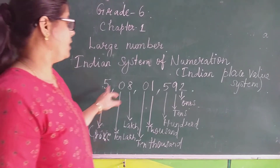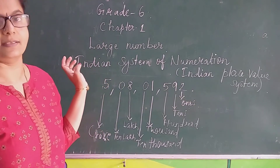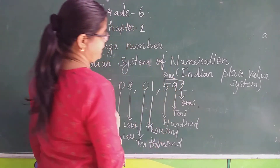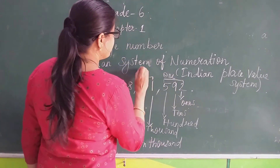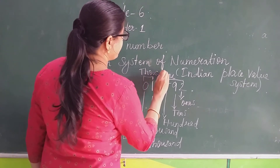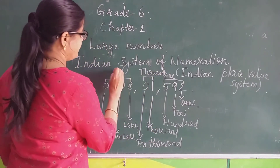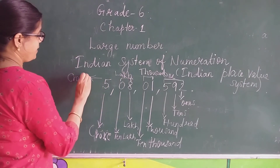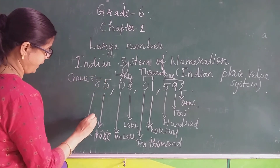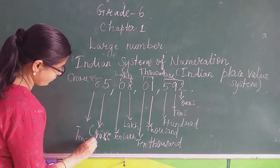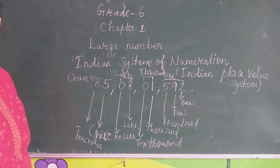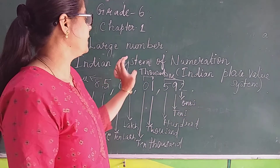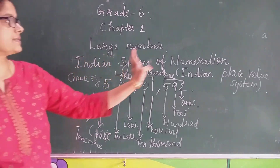This is the place value system in the Indian place value system. It has ones place — three numbers come under the ones period. Two numbers come under the thousands period. Two numbers come under the lakhs period. And this comes under the crore period. After that, if some number comes, it would be in the ten crore place. So this is the way we read and write a number using the Indian place value system, or Indian system of numeration.